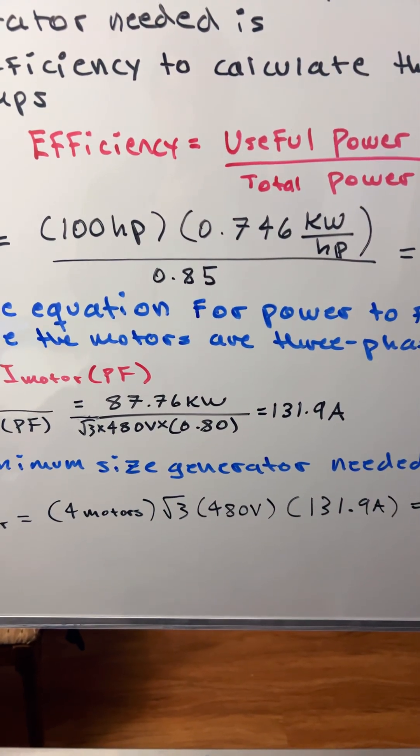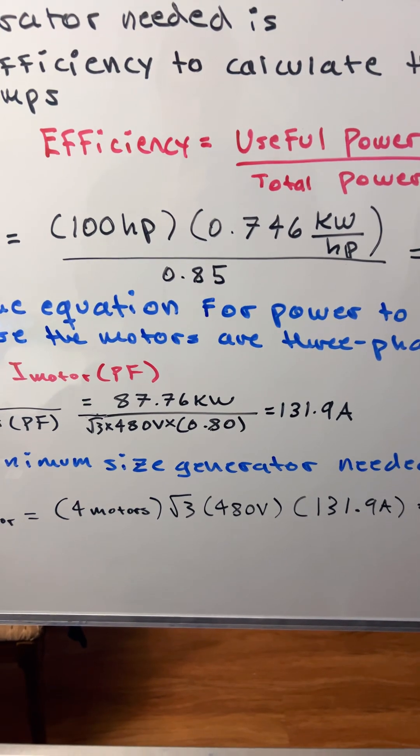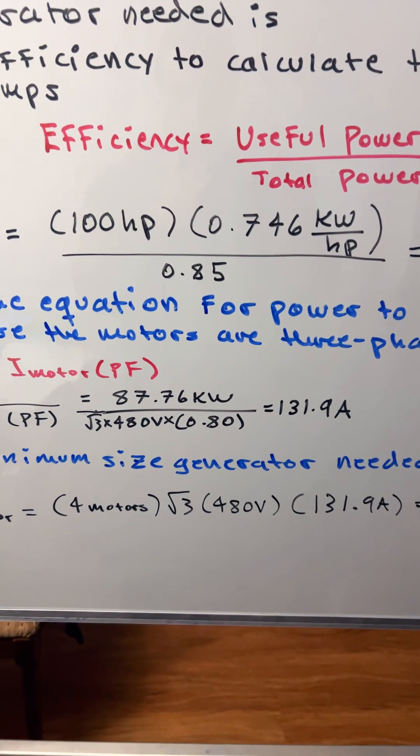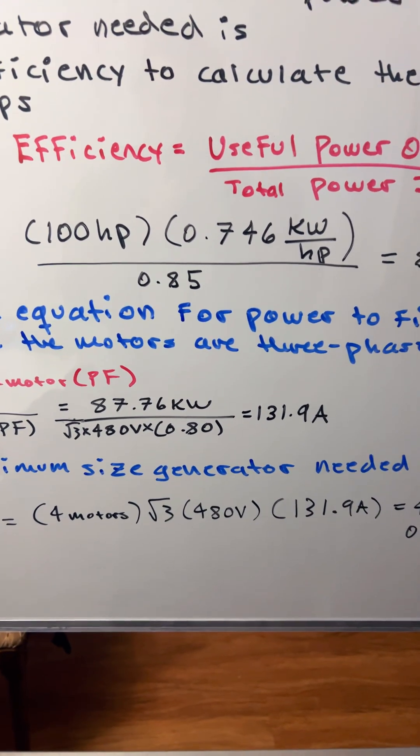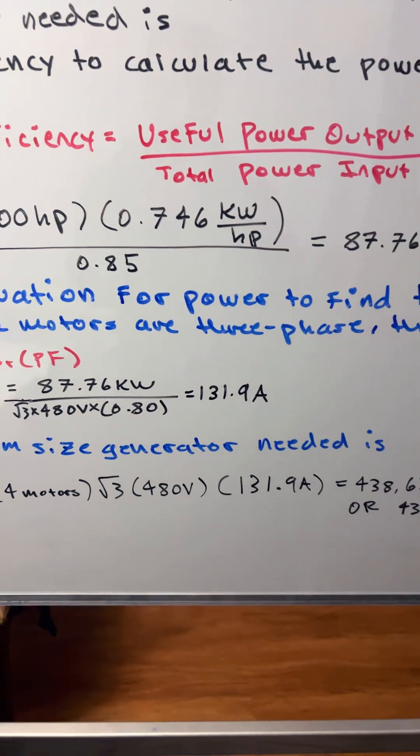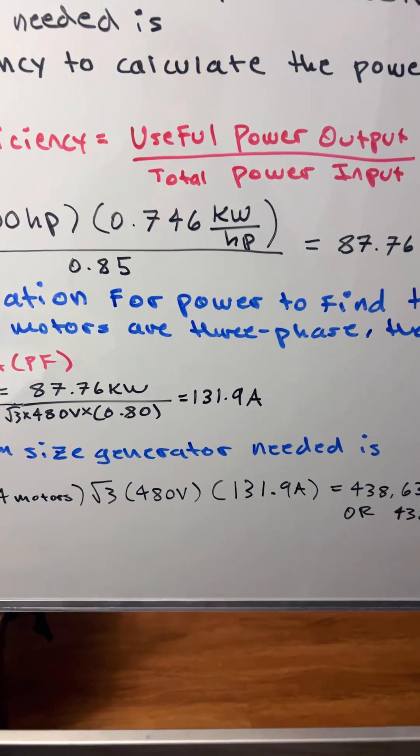We plug in the values: 87.76 kilowatts divided by square root of 3 times 480 volts times 0.8 power factor, and that gives us 131.9 amps.